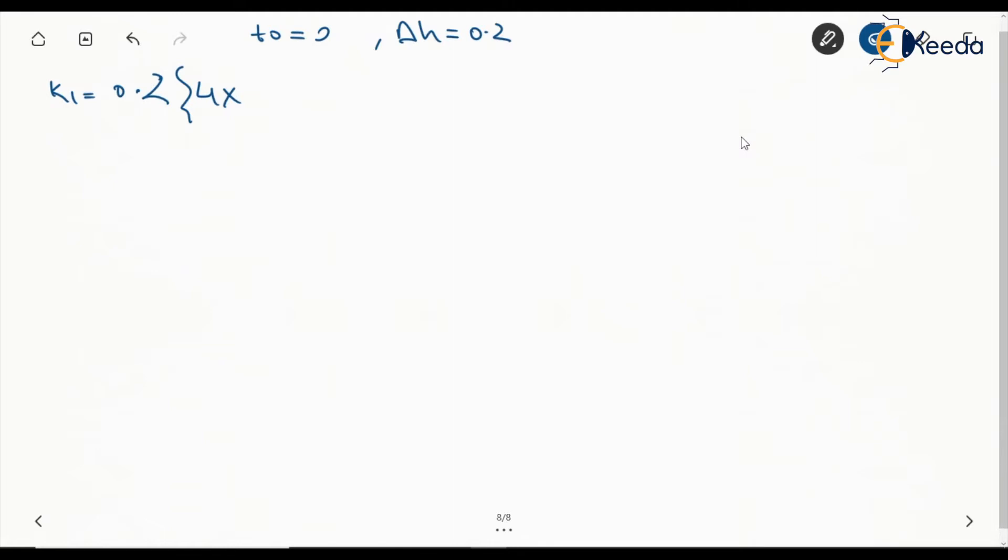So this is going to be 4 times (since t₀ is 0, h/2 is 0.1, so t₀ + h/2 becomes 0.1) plus 4. This is 4.4 times 0.2, which is 0.88. This is K₂.